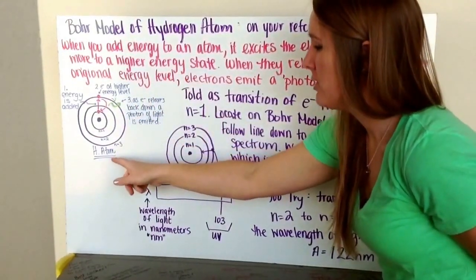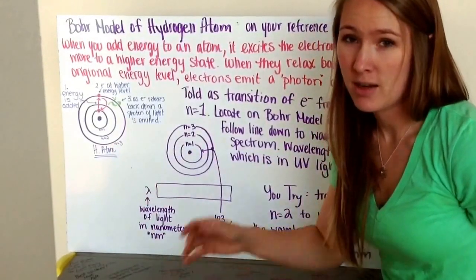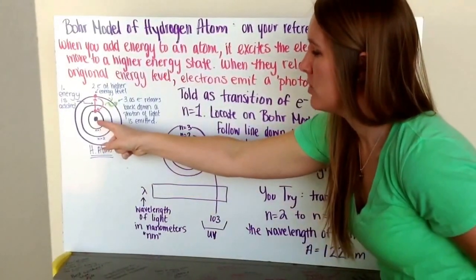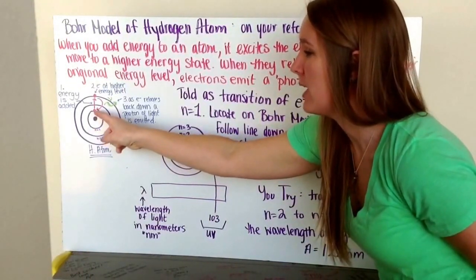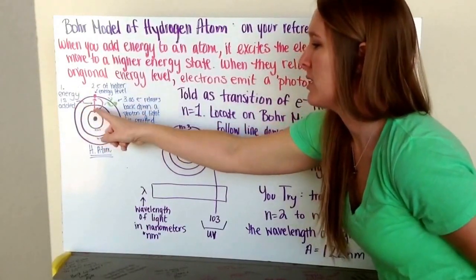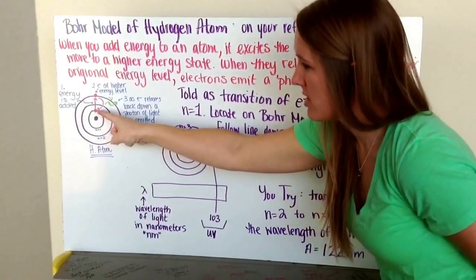So this is a drawing of what's in words here. I have my hydrogen atom. Remember, hydrogen atoms just have one electron. I have my nucleus, and my electron typically sits right on my first ring. And here, energy is added,